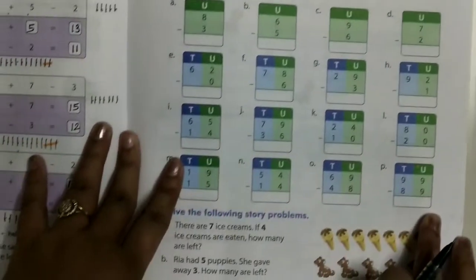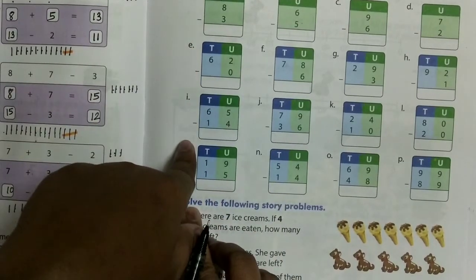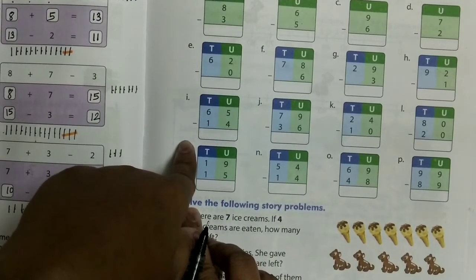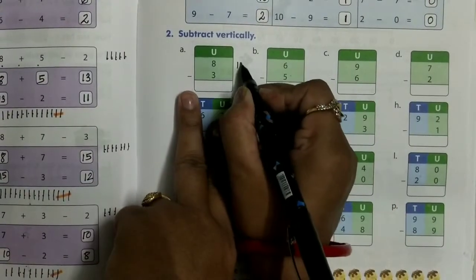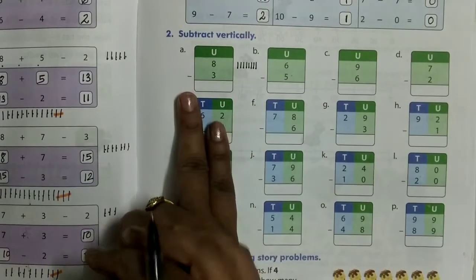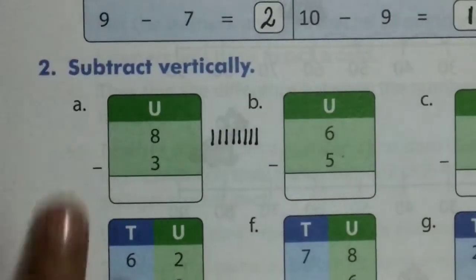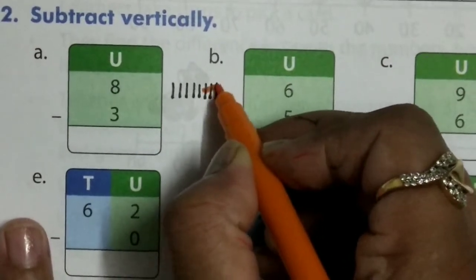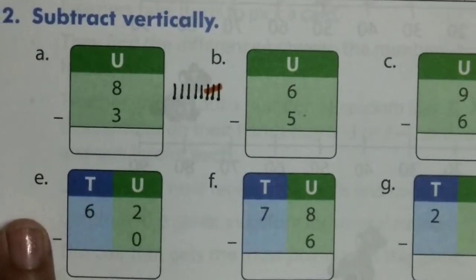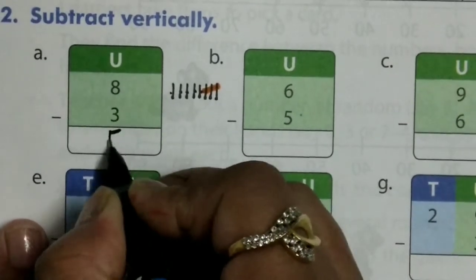Now subtract vertically — we subtract by drawing lines. 8 minus 3: draw 8 lines — 1, 2, 3, 4, 5, 6, 7, 8. From 8, cut 3 lines: 1, 2, 3. Count the remaining lines: 1, 2, 3, 4, 5. So 8 minus 3 equals 5.